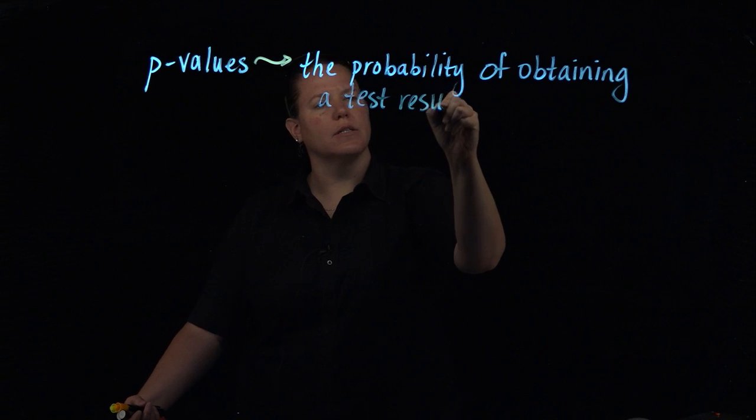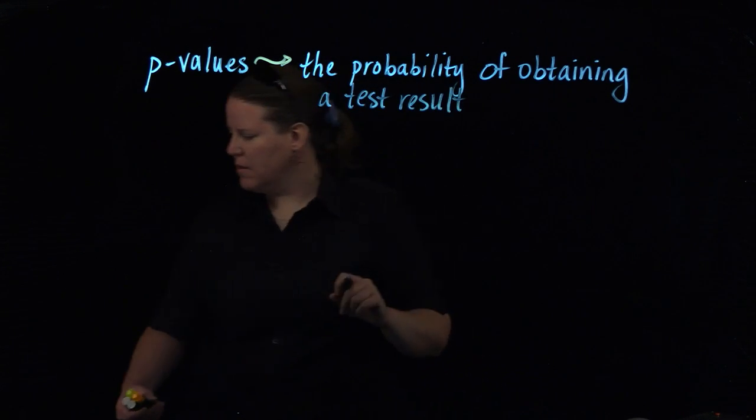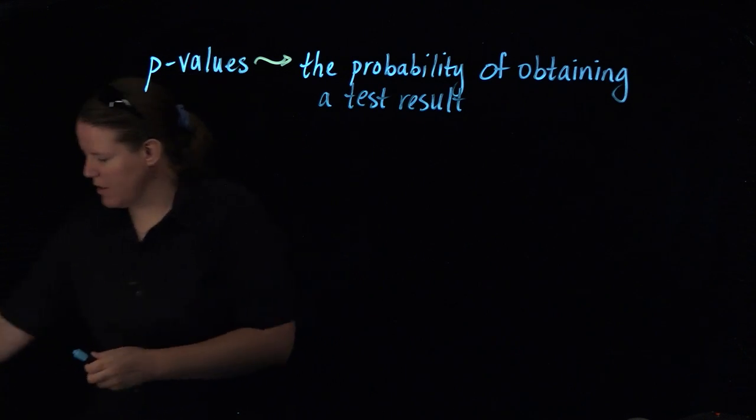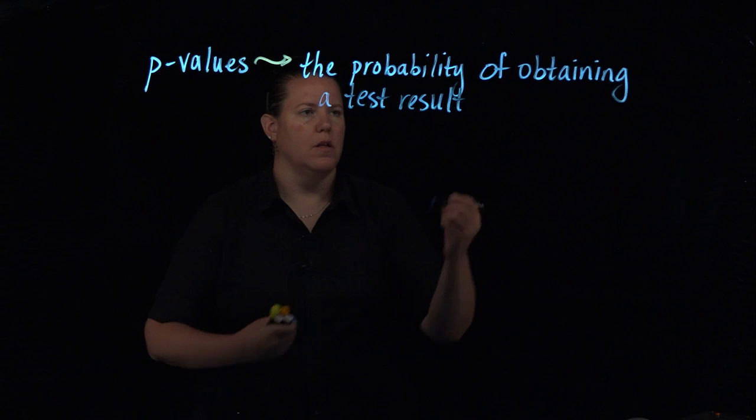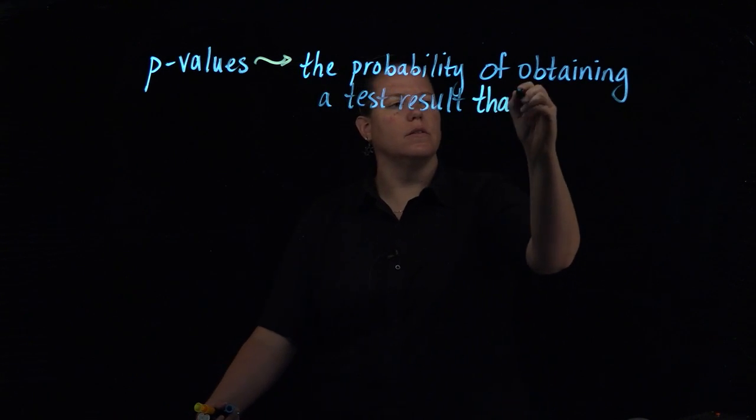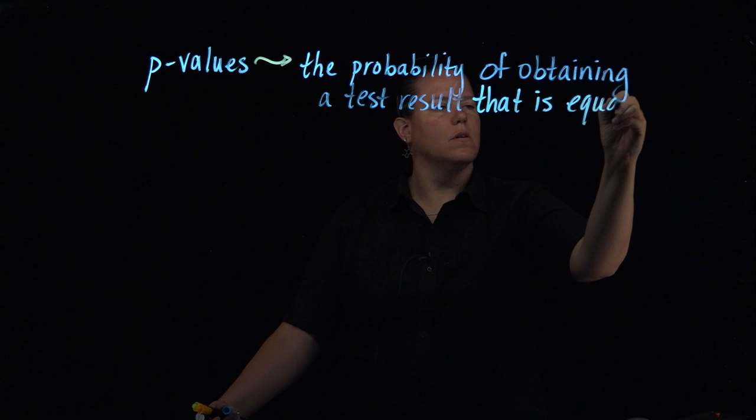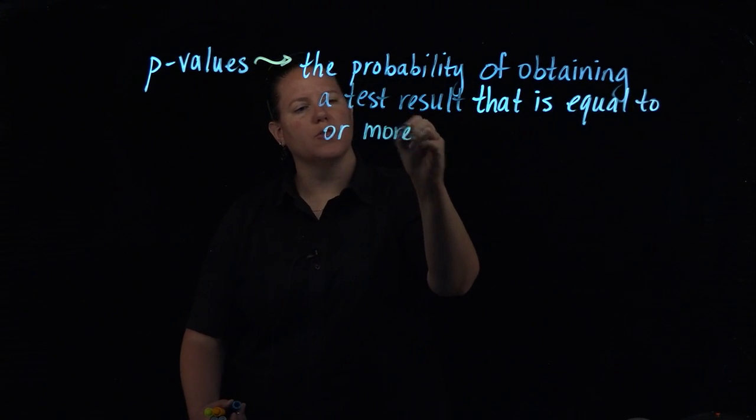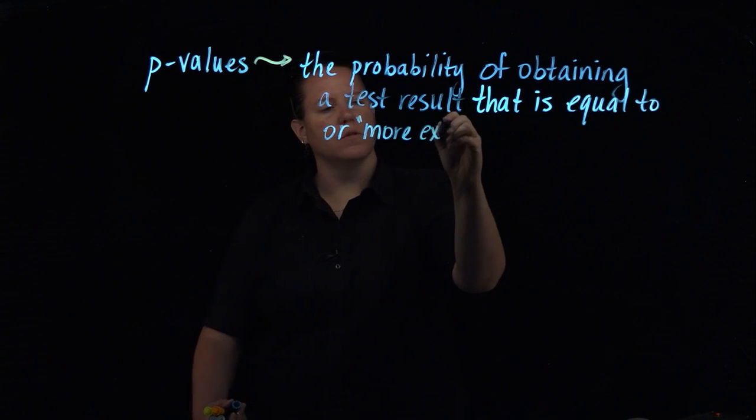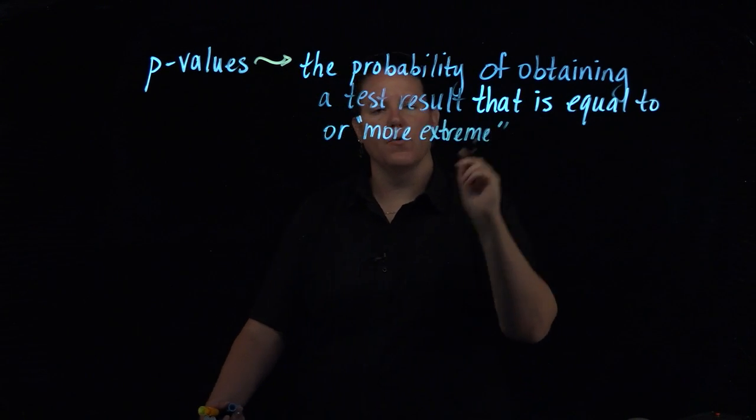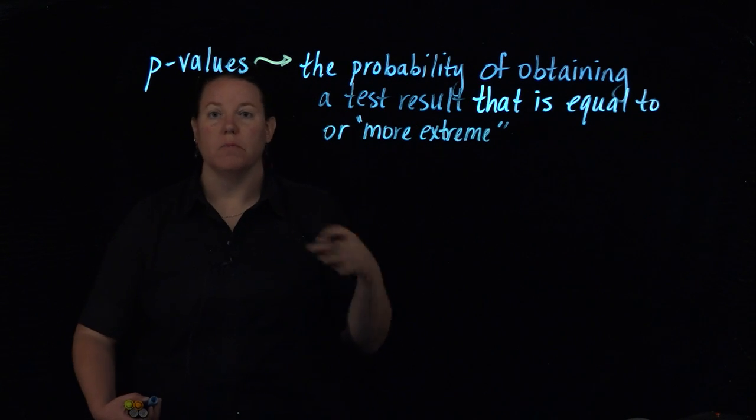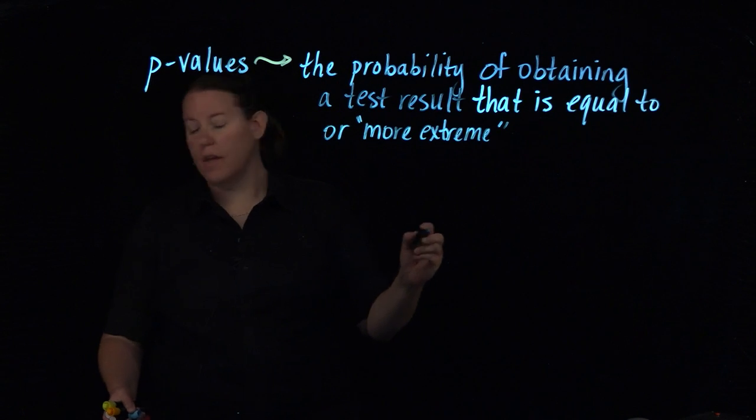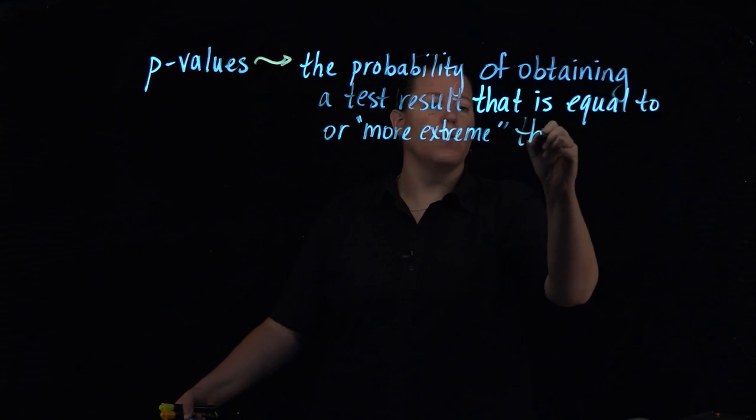Because you're doing this in the context of a statistical test. A test result that is equal to or more extreme. And more extreme is always in quotes because extreme values in statistics mean different things for different tests. More extreme than what was observed, than what was actually observed.